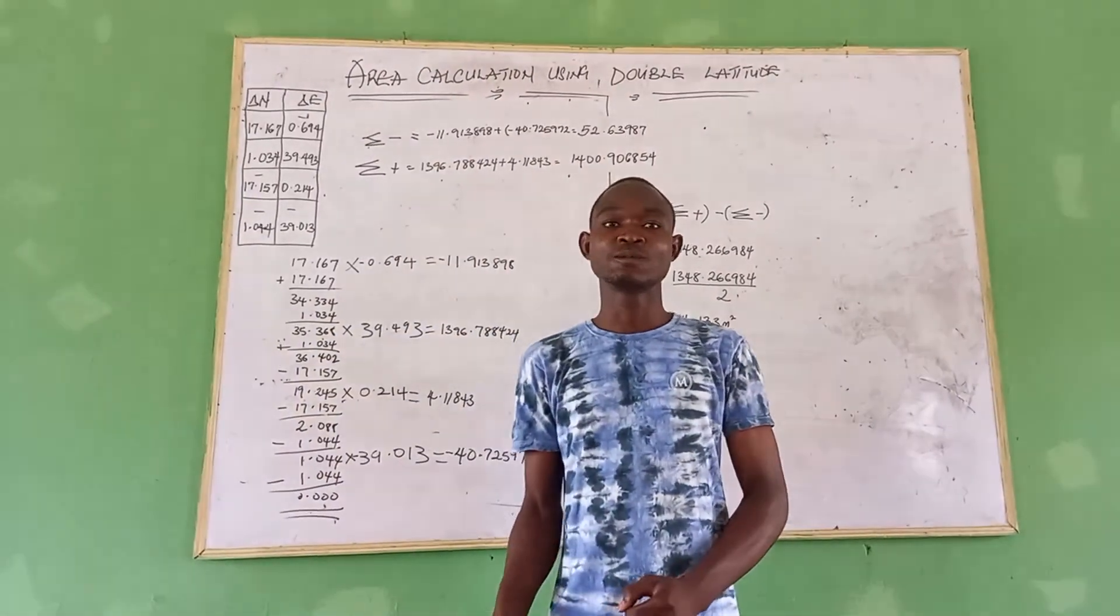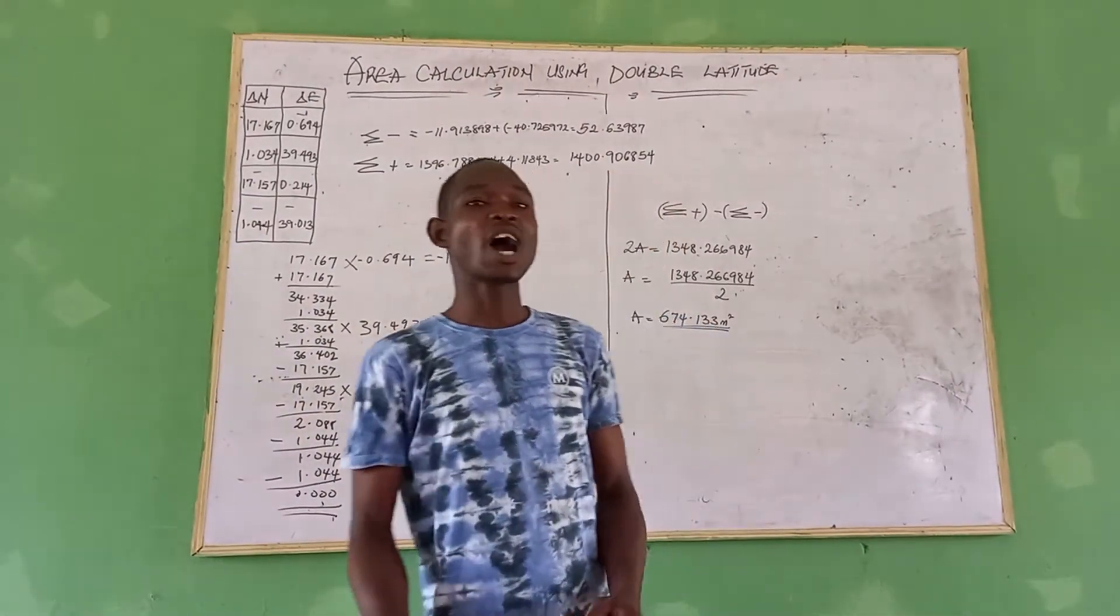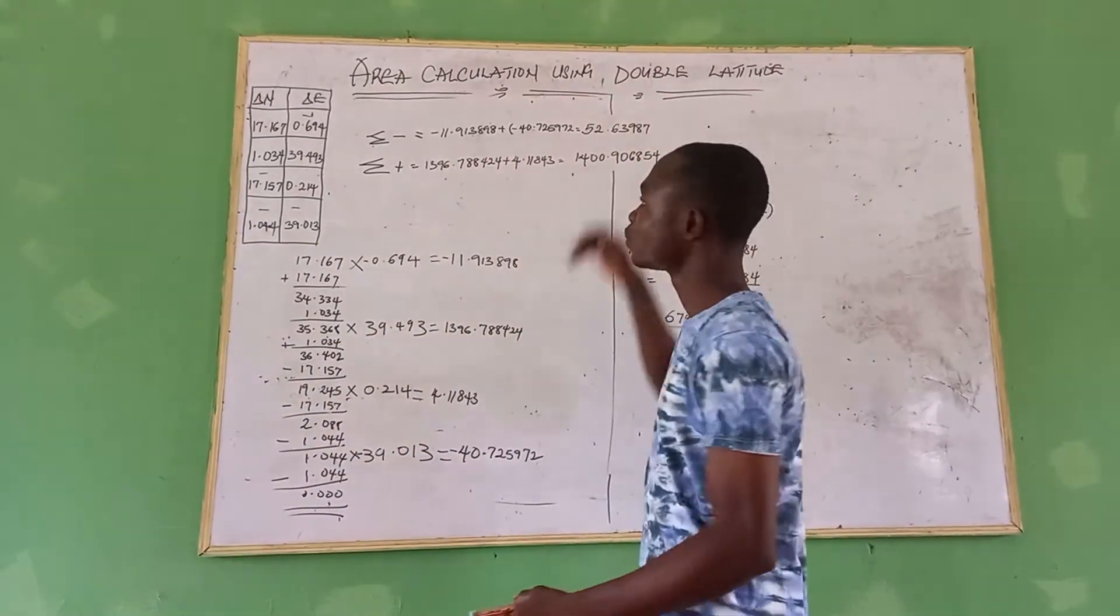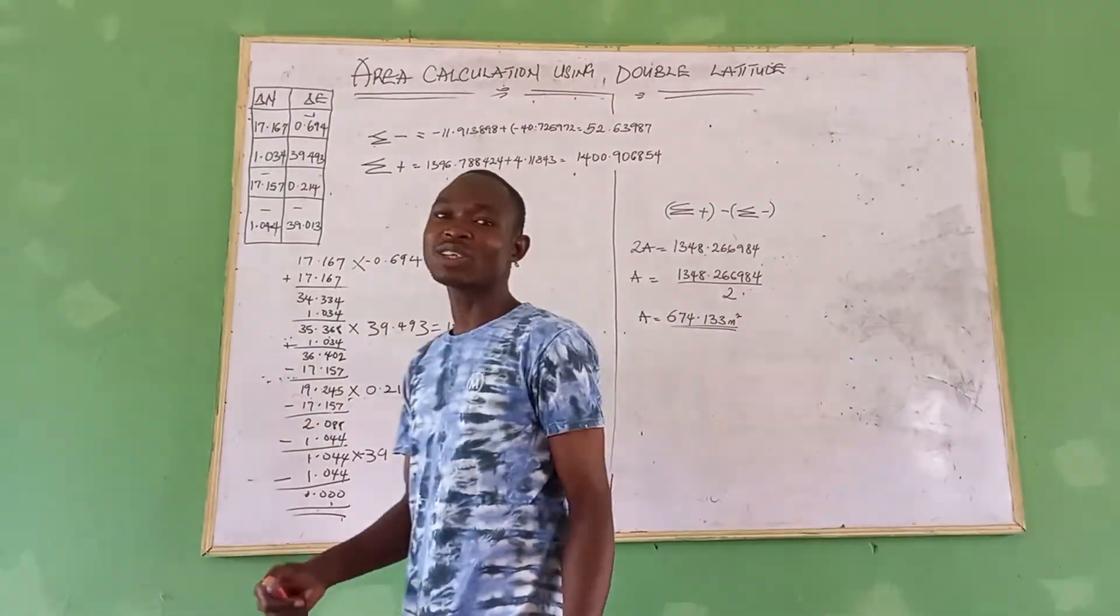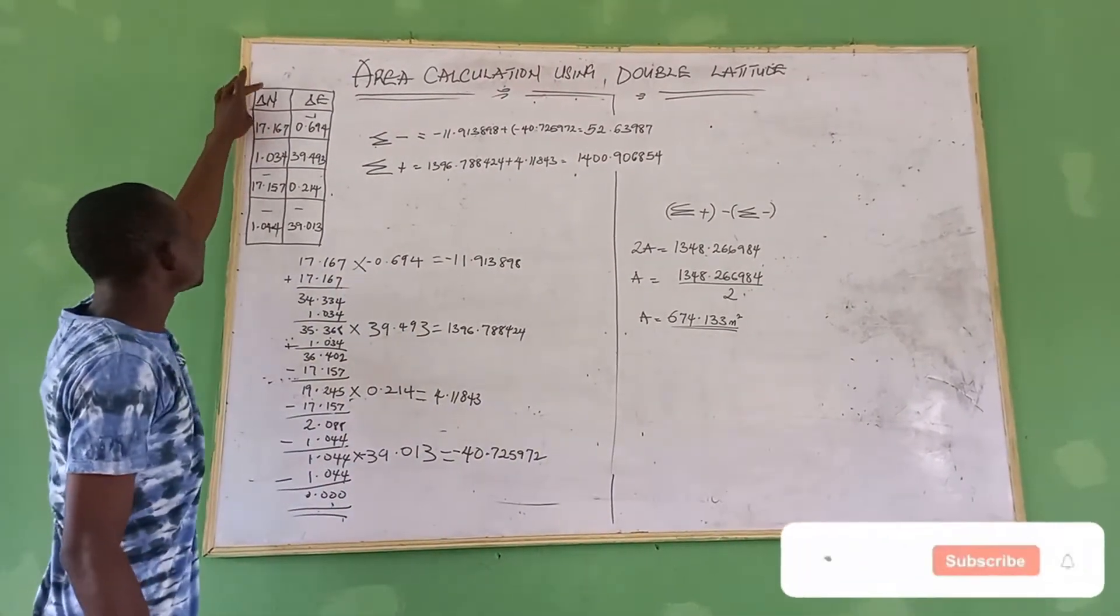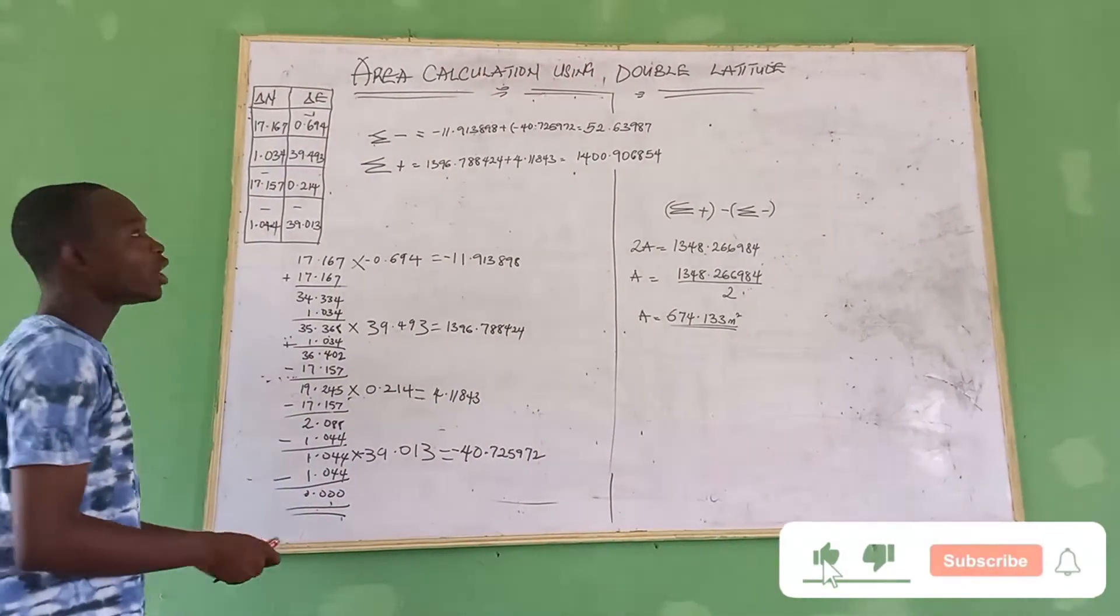Hello, welcome back to my channel. Today I'll be showing you how to calculate area using double latitude. In order to calculate your area using double latitude, you will use your data notice and data listing. The value of your data notice and your data listing.